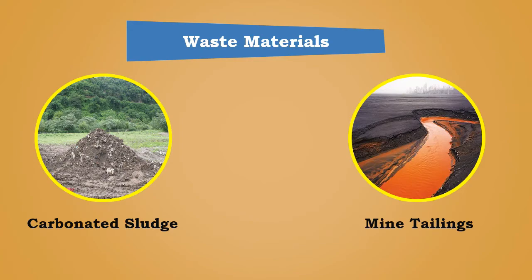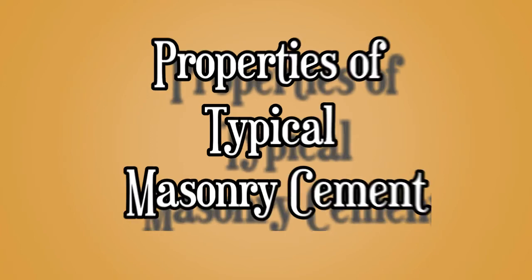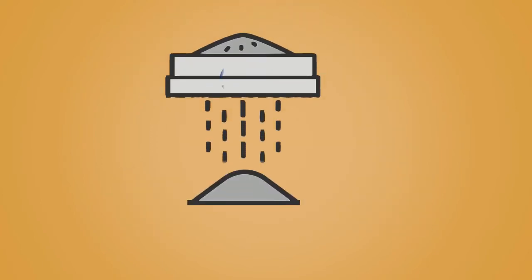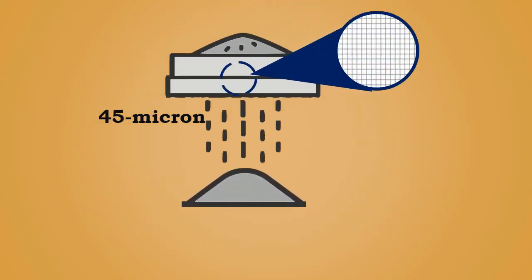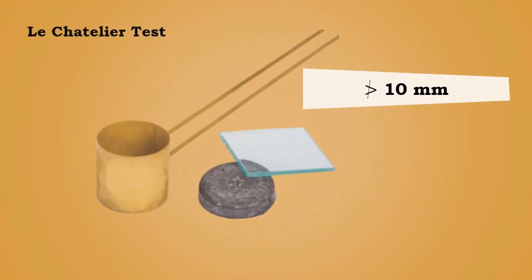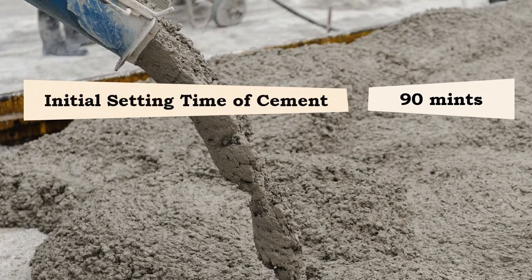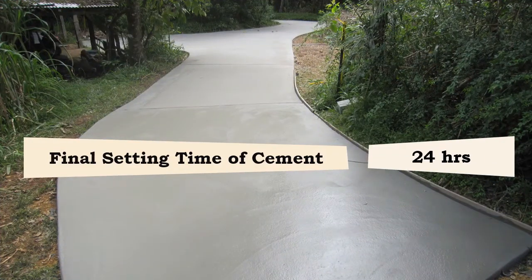Properties of typical masonry cement: the fineness residue should be a maximum of 15 percent when tested on a 45-micron sieve. The cement should not have expansion more than 10 millimeters for the Le Chatelier test and 1 percent for the autoclave test. The initial setting time is 90 minutes and the final setting time is 24 hours.